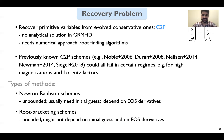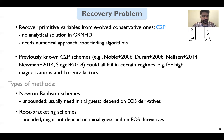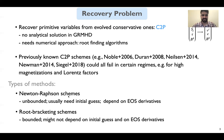The C2P can be an error-prone part of evolutionary codes, and existing state-of-the-art C2P schemes in GRMHD could all fail in certain regimes, for example in highly magnetized low density regions. Segal et al. 2018 gave a good overview of different C2P schemes, and most of these schemes fall into two categories, based either on Newton-Raphson root-finding techniques or on root bracketing methods.